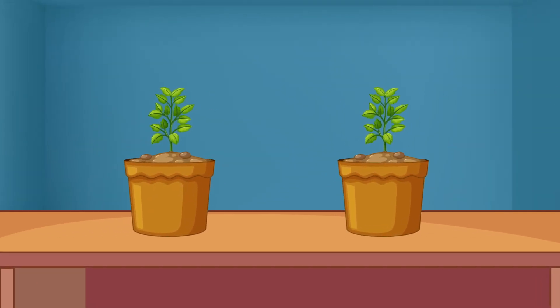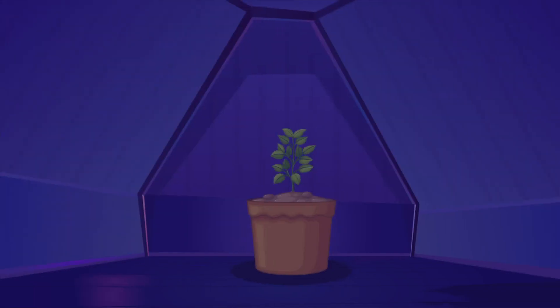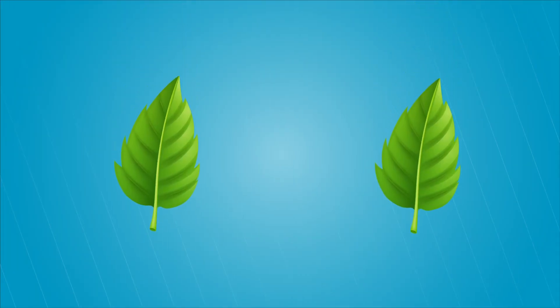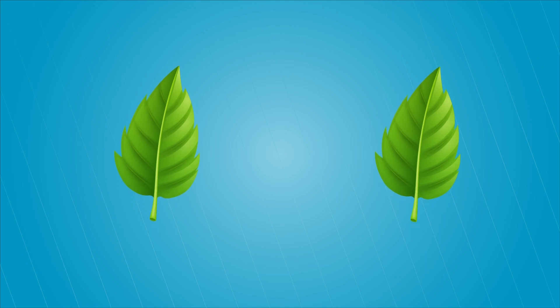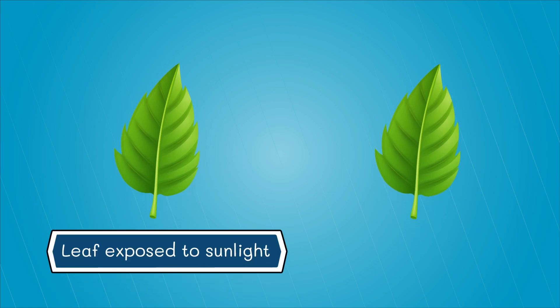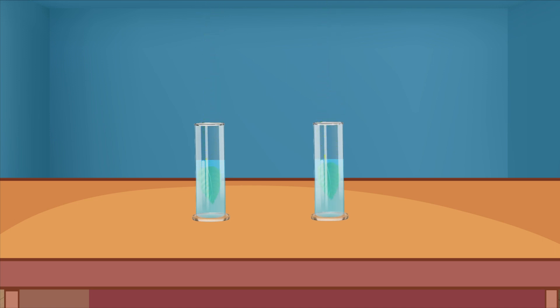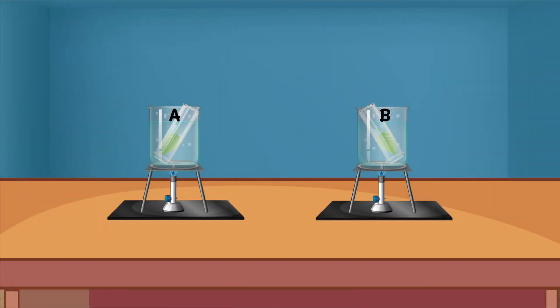Take two potted plants of the same kind. Keep one plant in the dark for 72 hours and the other in sunlight. Pluck two or three leaves from both plants. Label the leaf plucked from the plant exposed to sunlight as A, and the leaf plucked from the plant kept in the dark as B. Put the leaves in boiling water, then place them in small beakers and cover the leaves with spirit. Keep the beakers in boiling water to dissolve chlorophyll from the leaves.